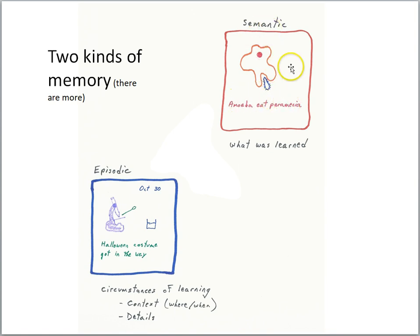Notice then the semantic memory doesn't have all the details of the context of the learning episode. The semantic memory does not include the circumstances of the learning—it just includes what was learned.